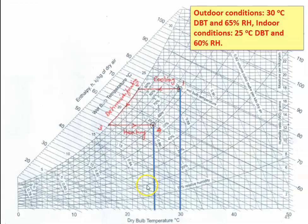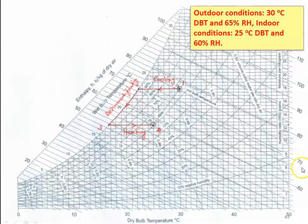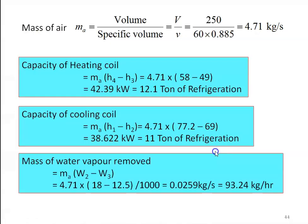In summary, for this problem: the capacity of the cooling coil in tons of refrigeration, the capacity of the heating coil in kilowatts, and the mass of water vapor removed are found using the psychrometric chart. Carefully locate indoor and outdoor condition points, draw the process lines — cooling, then dehumidification at saturation temperature, then heating — and read the values to calculate the required design parameters.